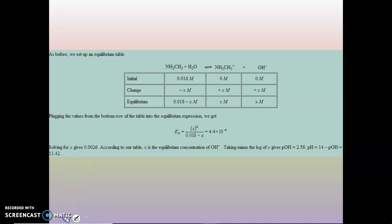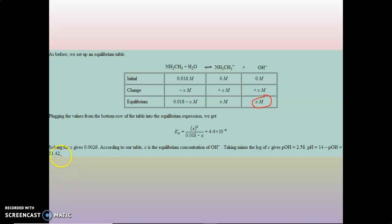Solving for X using the quadratic formula — and if you don't have that function on your calculator, I definitely suggest you download it. According to the ICE table, X is the equilibrium concentration of hydroxide. Taking the negative log of that gives a pOH of 2.58. Since pH equals 14 minus pOH, the pH of the solution is 11.42 — which is on the basic side, as expected for a weak base.